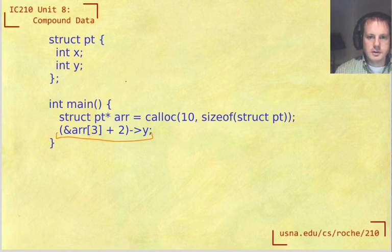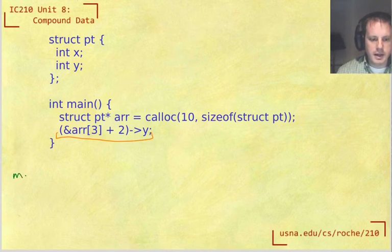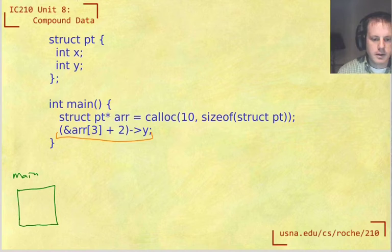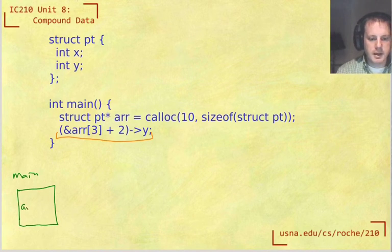We can also think about this pictorially, which I think can be pretty useful. So in terms of pictures, what do we have going on here is we have main over here in the stack. And inside main, we have this array, which is a pointer to a struct PT.